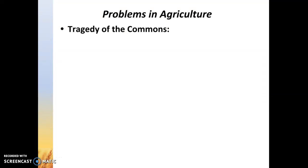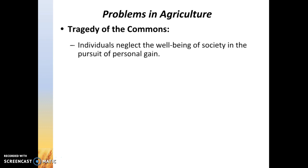I apologize for not fitting this into the last lecture, so I'll make it really quick. When we talk about problems in agriculture, there's a problem that exists called the tragedy of the commons. This is something that involves other aspects of life as well. However, in agriculture, it's a pretty big deal and it has pretty far-reaching consequences. The tragedy of the commons is when individuals neglect the well-being of society and future generations in pursuit of their own personal gain — basically human nature choosing to be greedy instead of thinking about how it will affect others.